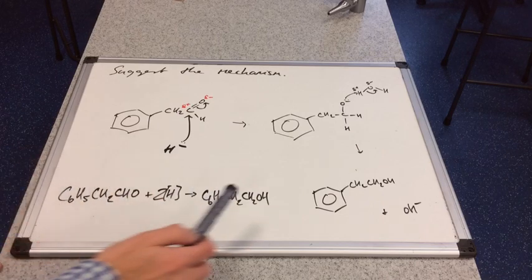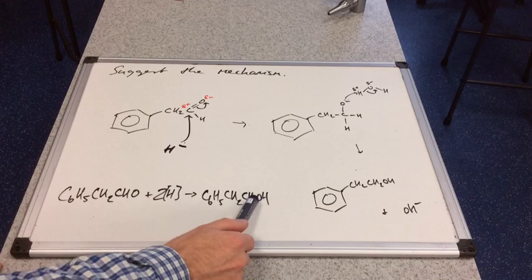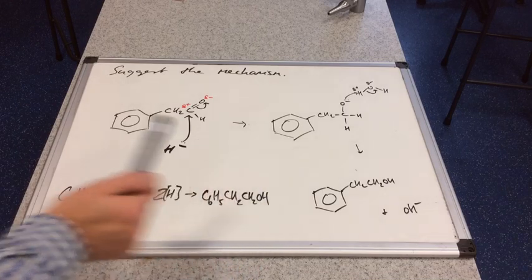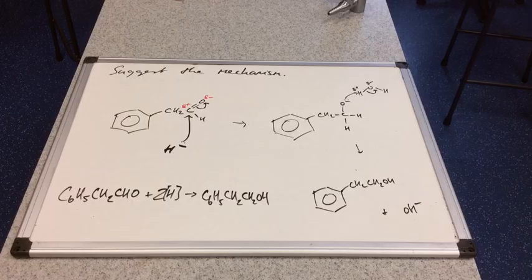So we're going to have the H's either side of the O. So we get CH2CH2OH. Phenyl, C6H5.